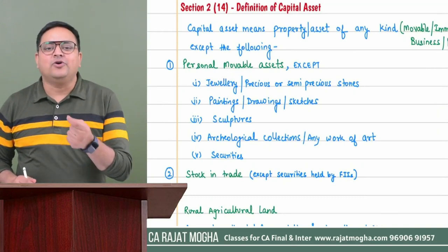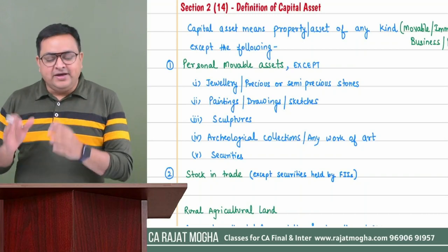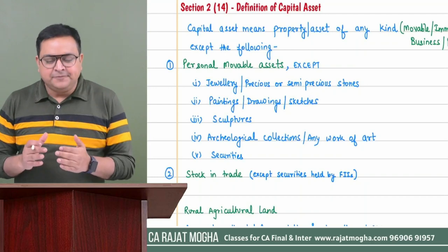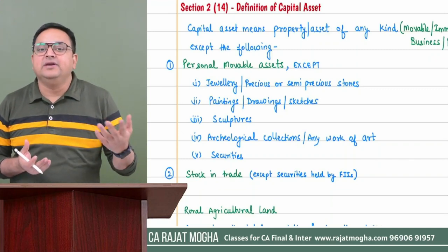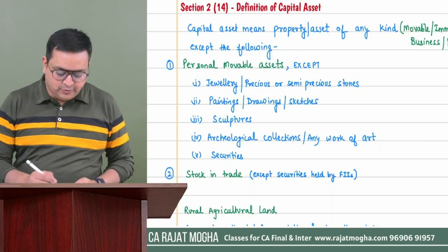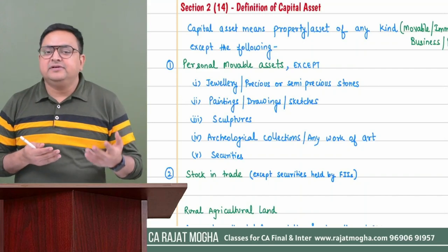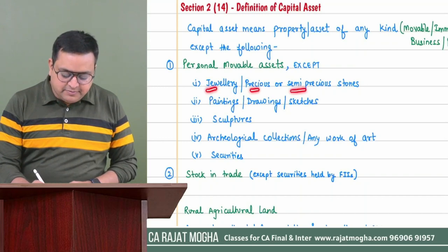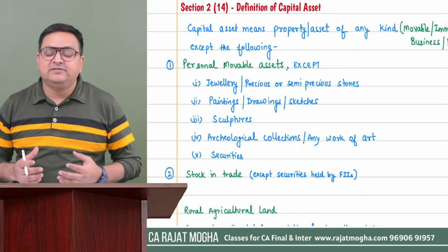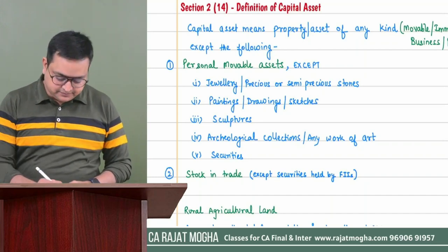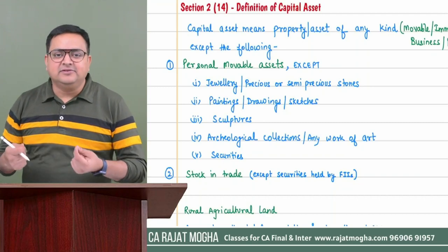Although personal movable assets are not capital assets, there are certain exceptions — some personal movable assets are treated as capital assets because their value keeps increasing. These include jewelry, gold, diamond, precious and semi-precious stones — if you sell these, capital gain will arise. Also included are paintings, drawings, sketches, sculptures, archaeological collections, any work of art, and securities such as shares, debentures, bonds — all these are considered capital assets.